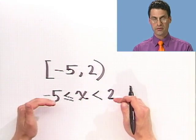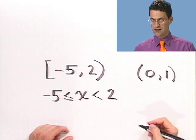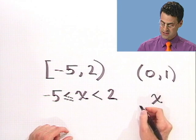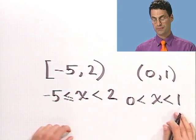So you can now convert from here to here, and from here to here. And one last one, maybe try this one, 0 to 1. What does that mean? Well, that means all the values for x that are strictly bigger than 0, but strictly less than 1, because there's two parentheses here.